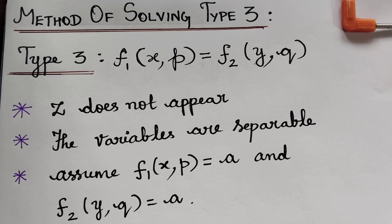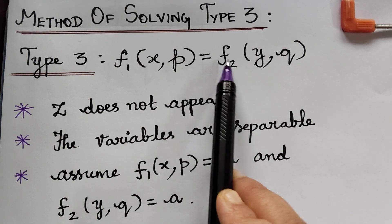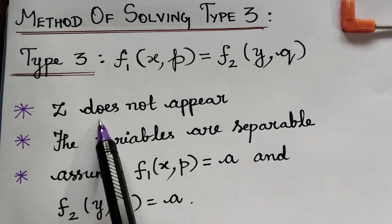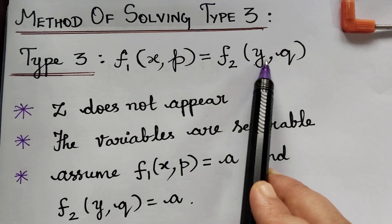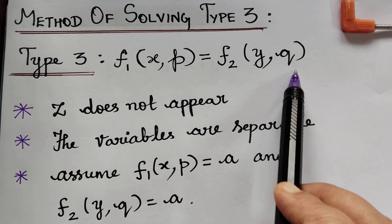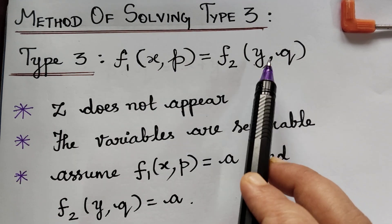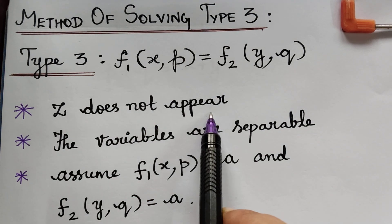Dear students, under the topic of non-linear partial differential equations, here we have the method of solving Type 3. It will be of the form f1(x, p) = f2(y, q). That is, z does not appear. We will be having only x, y, p, and q in the equation — or we may also have x, p, and q, or y, p, and q. But z will not appear.